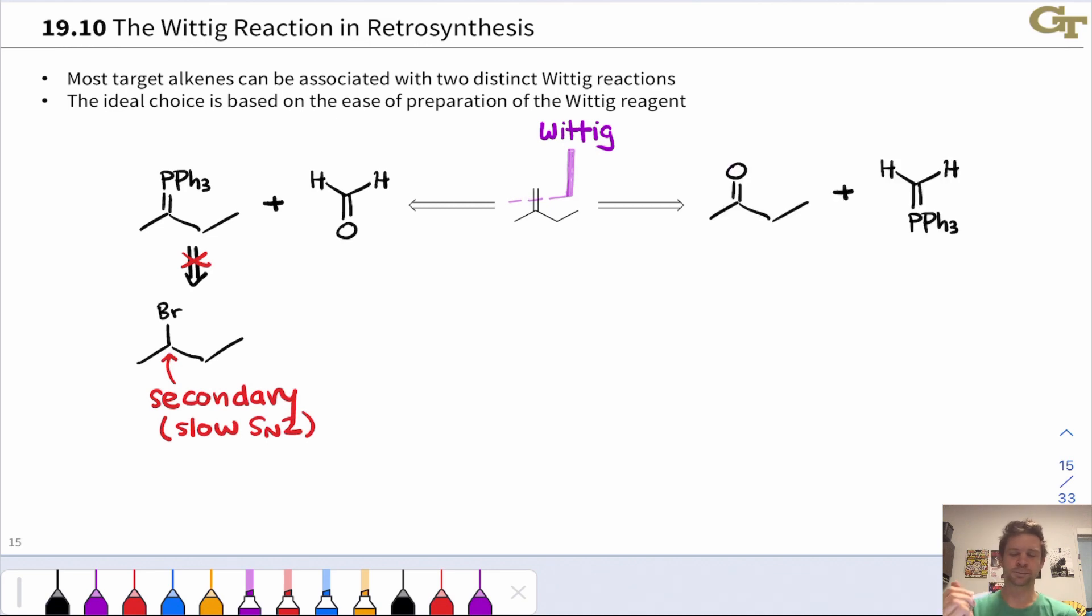Let's consider the other possibility. Well, the other possibility would use 2-butanone as the ketone substrate and this phosphonium ylid with a CH2 group linked to the PPh3.